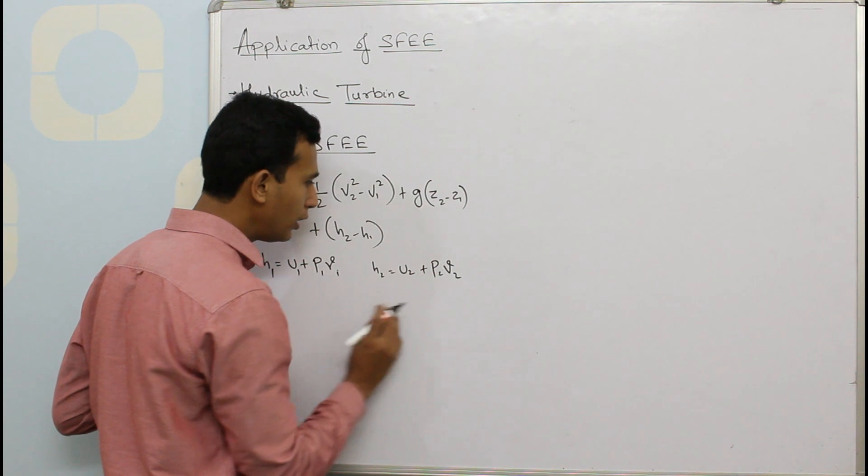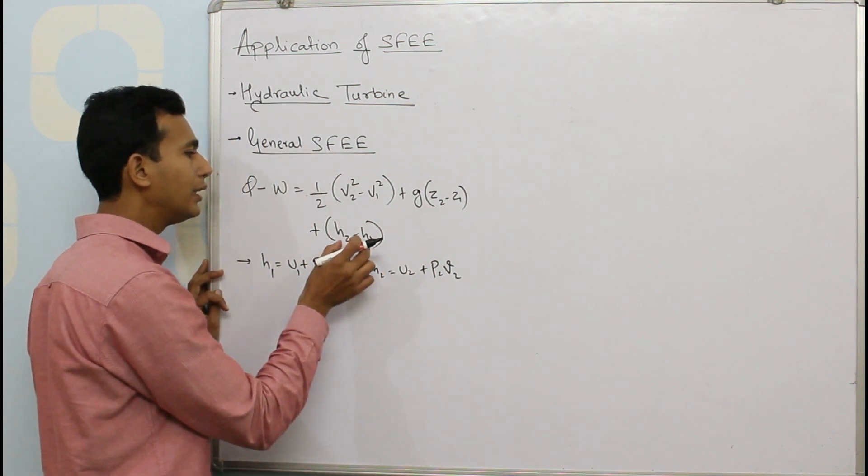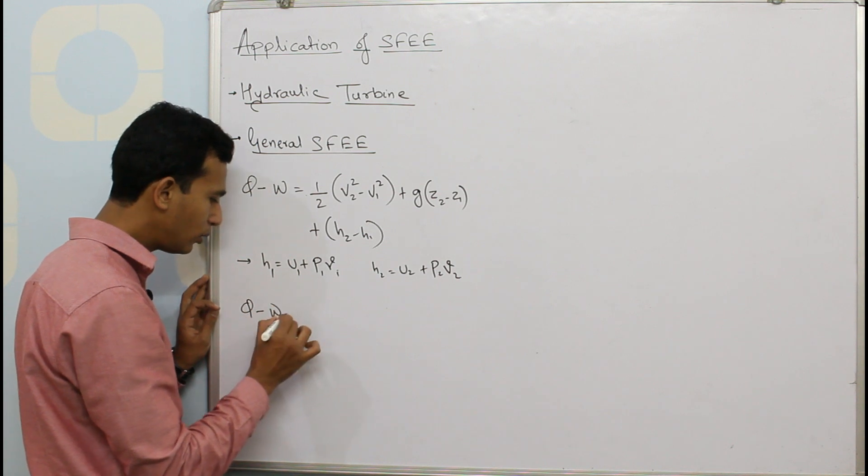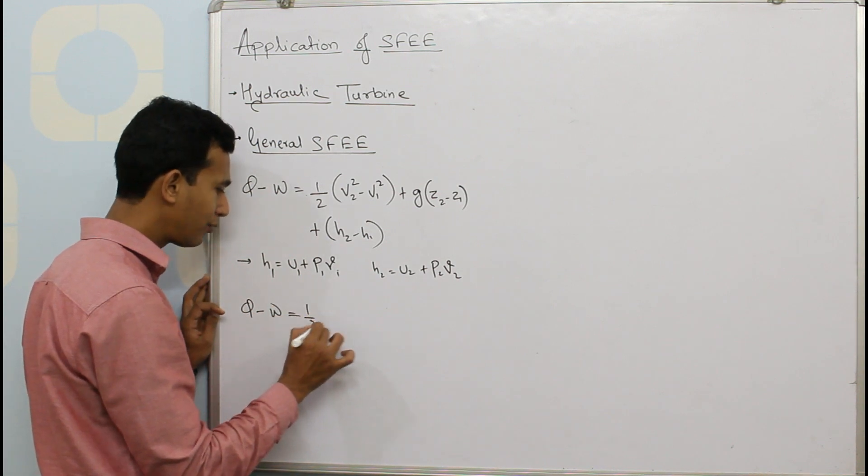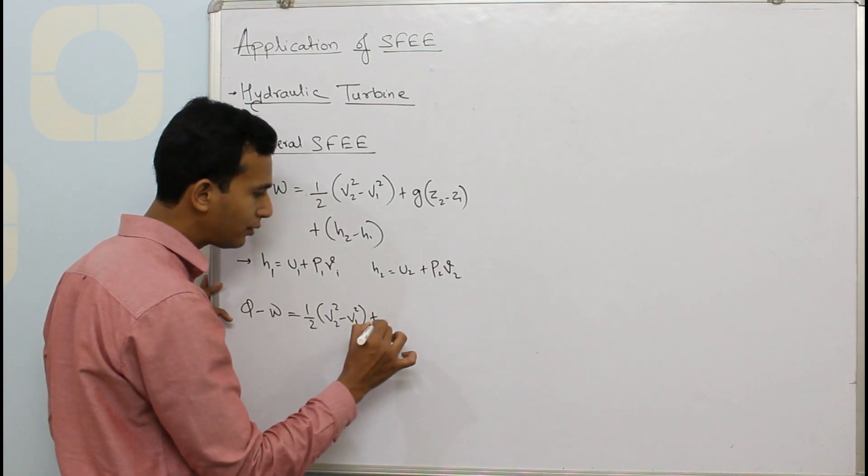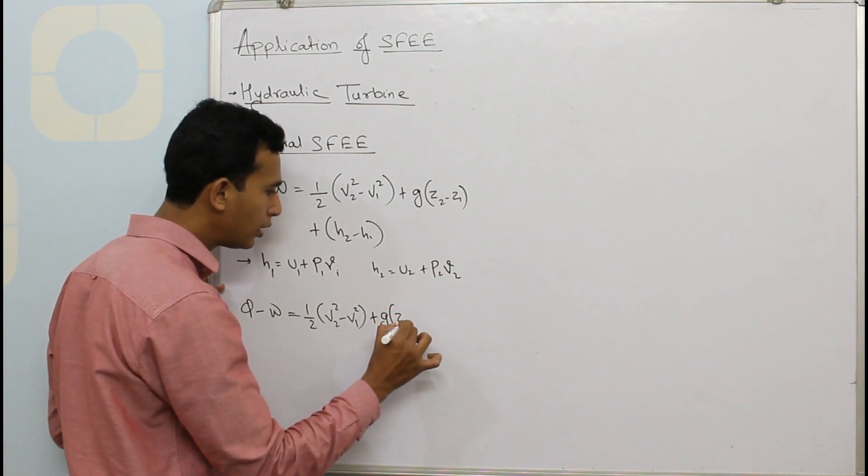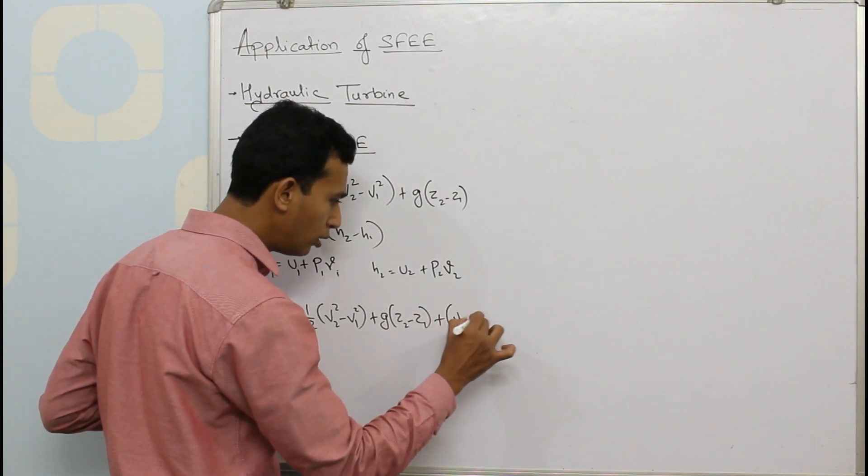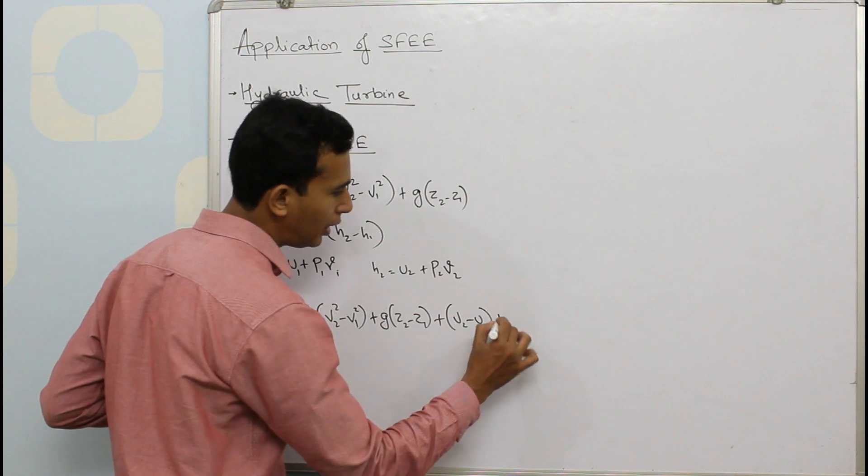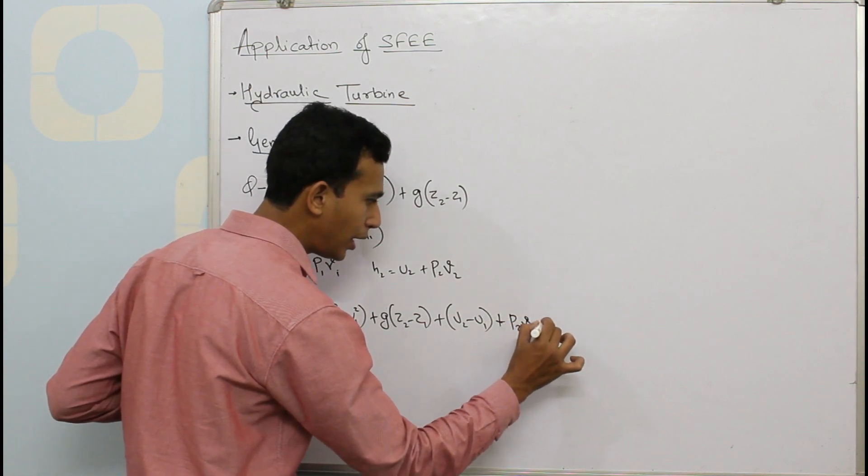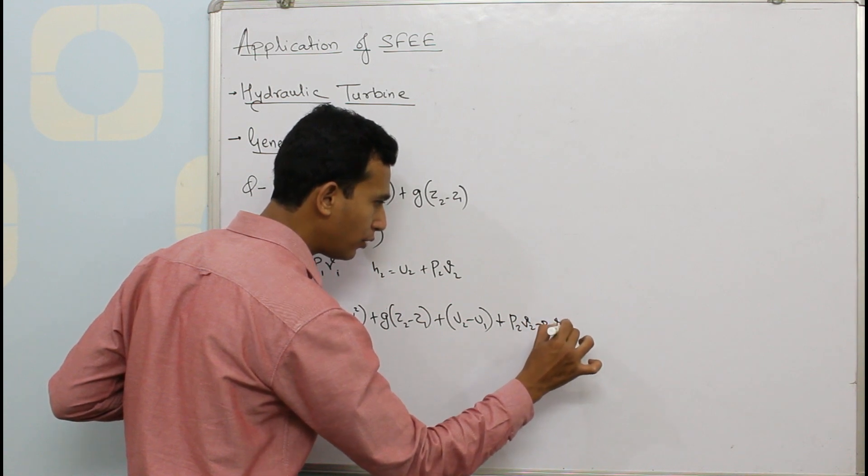If I substitute these two in terms of this we get Q minus W equals half V2 square minus V1 square plus G into bracket Z2 minus Z1 plus U2 minus U1 plus P2V2 minus P1V1.